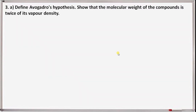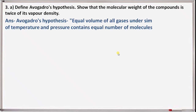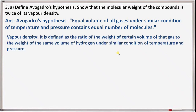Next question 3: define Avogadro's hypothesis, and show that the molecular weight of a compound is twice its vapor density. Avogadro's hypothesis: equal volumes of all gases under similar conditions of temperature and pressure contain equal numbers of molecules. Vapor density is defined as the ratio of the weight of a certain volume of a gas to the weight of the same volume of hydrogen under similar conditions of temperature and pressure.